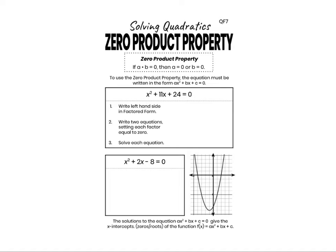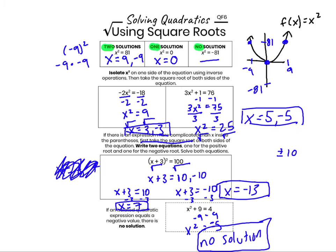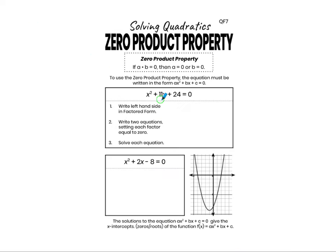Solving quadratic equations using the zero product property is a second strategy that we have for solving quadratic equations. We have previously solved quadratics using square roots, and this strategy is great when we have an x squared or an expression squared in our equation. However, this strategy does not work when we have a linear or an x term in our equation. So this is an example of an equation we cannot solve using square roots: x squared plus 11x plus 24 equals zero. We could subtract 24, but we don't know how to take the square root of x squared plus 11x. So we're going to solve this equation using the zero product property.